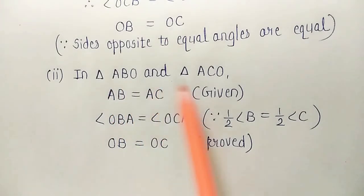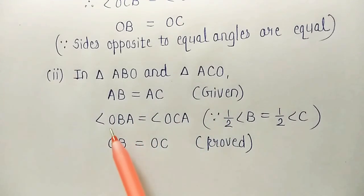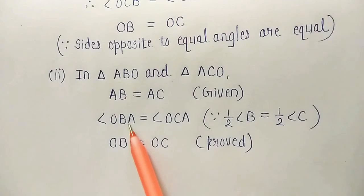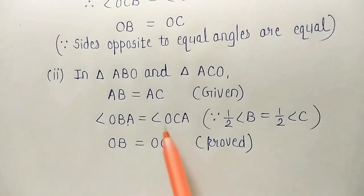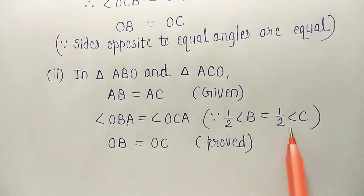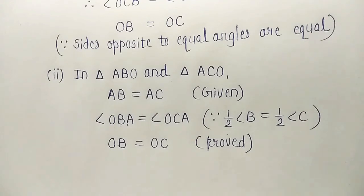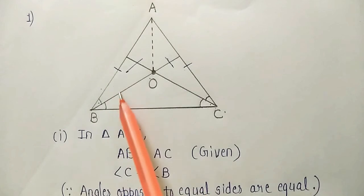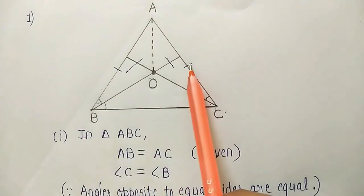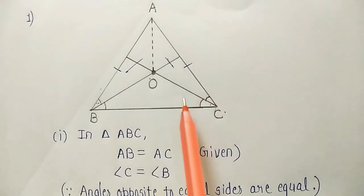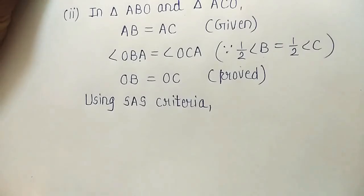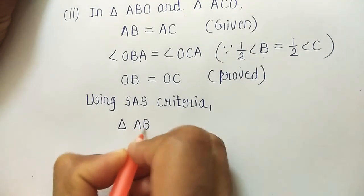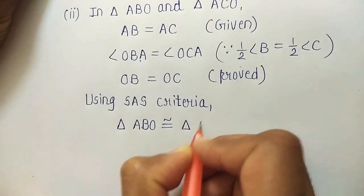So in triangle ABO and triangle ACO: AB equals AC (given); angle ABO equals angle ACO because half of angle B equals half of angle C; OB equals OC (proved). These two are sides and the angle between them is the included angle — so according to Side-Angle-Side (SAS), triangle ABO is congruent to triangle ACO.